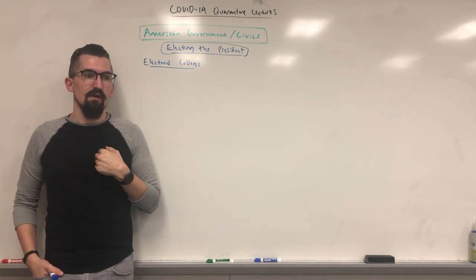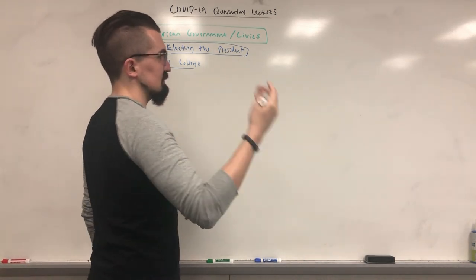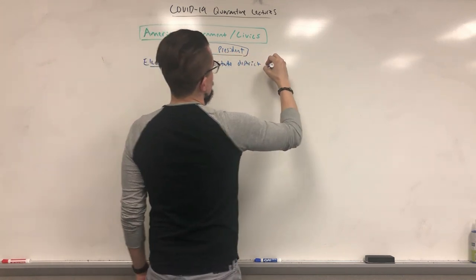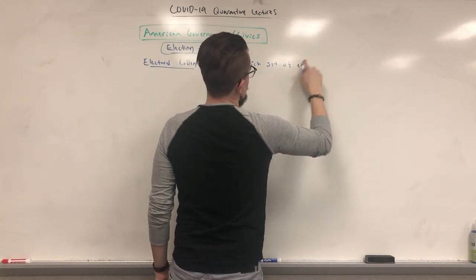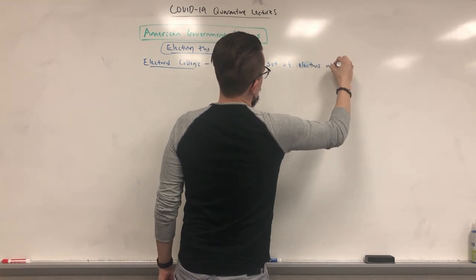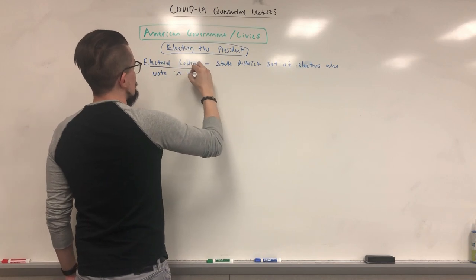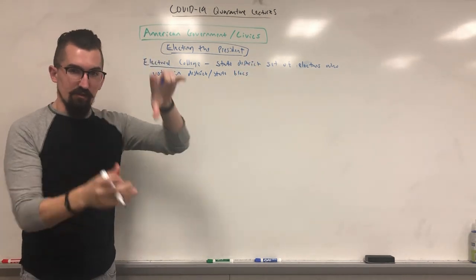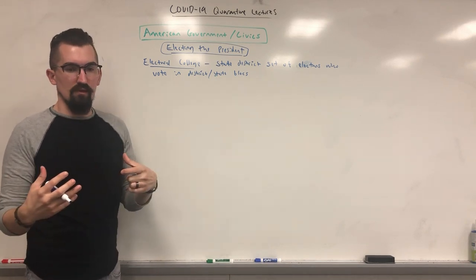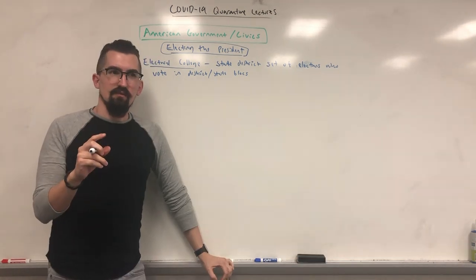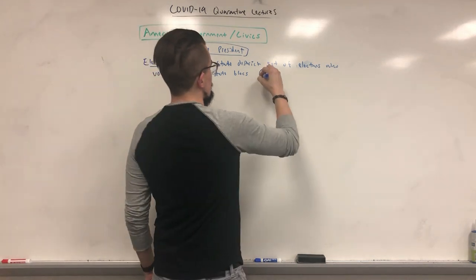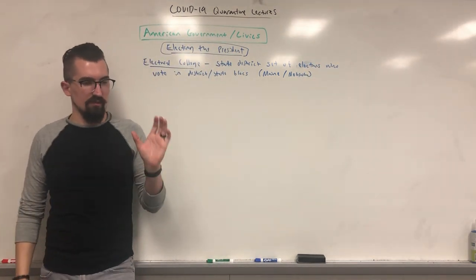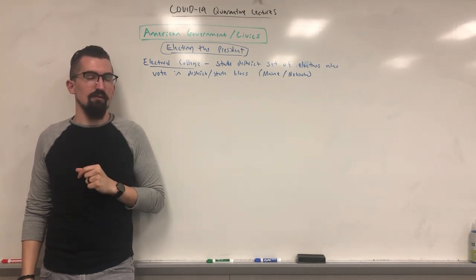You tally those up and the majority winner gets the presidency. So in summary: state districts set electors, who vote in district and then state blocks — whoever has the majority gets all the votes in that district and then all electoral votes for the state. The only exceptional states are Maine and Nebraska, which have a combined congressional district and population district system and don't vote in total blocks.